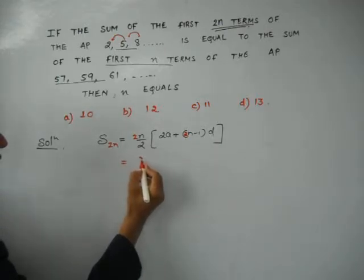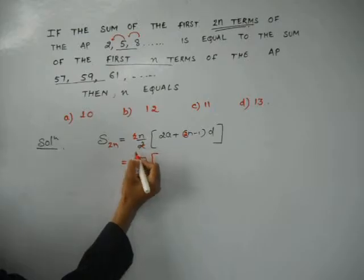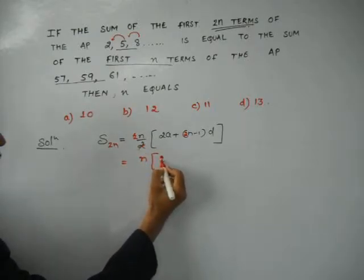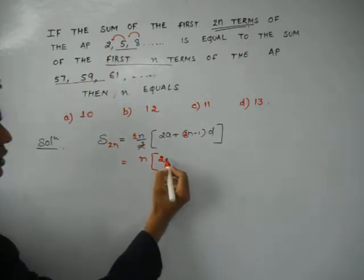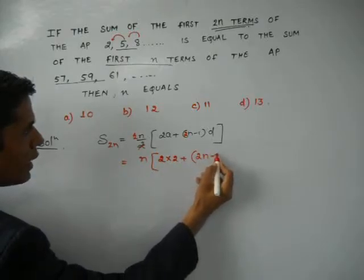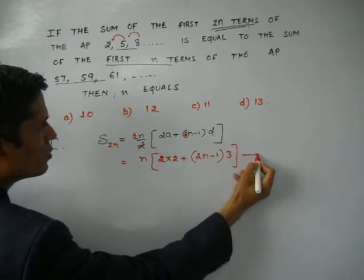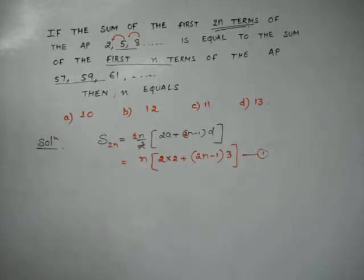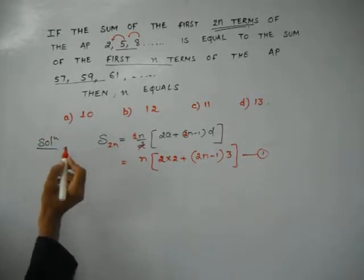So now, it is n by 2, 2 gets cancelled, 2 times. A is the first term, first term is here 2, plus 2n minus 1 into d is common difference 3. So, this is equation number 1 for the first AP.